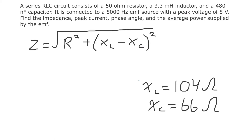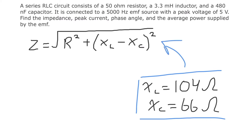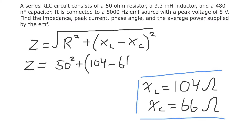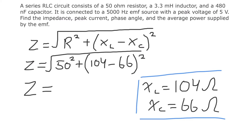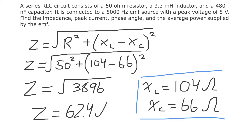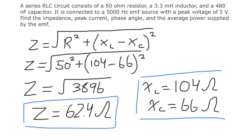Now that we have both reactance values, we can plug them into the impedance formula. Z equals the square root of (50 squared plus (104 minus 66) squared), which gives the square root of about 3896, so Z equals approximately 62.4 ohms. This is our total net impedance for the RLC circuit, accounting for contributions from the resistor, inductor, and capacitor.